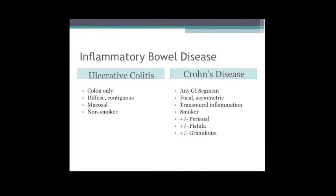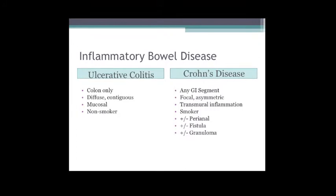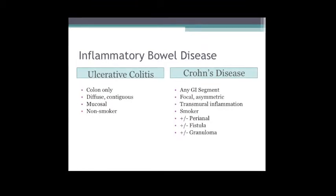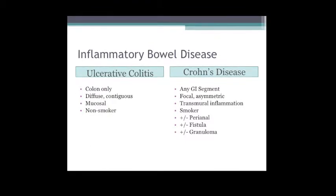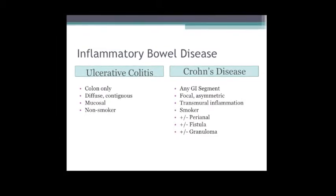Crohn's disease can affect anywhere from the mouth all the way to the anus; it is asymmetric and focal. These patients have transmural inflammation - the inflammation goes through the entire lining of the bowel wall. It's more commonly seen in smokers, and studies show we can do better with active Crohn's disease by stopping smoking than with any immunologic therapies we have.